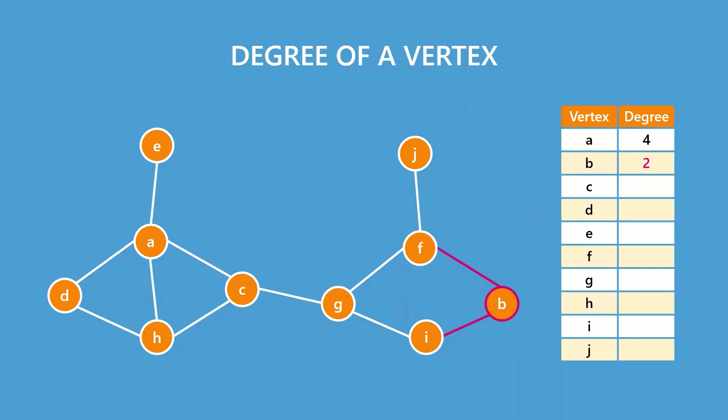The two edges attached to B gives B a degree of 2. Similarly, counting the edges yields degree of vertices C to J. By sorting degree from largest to smallest, we get a ranking.